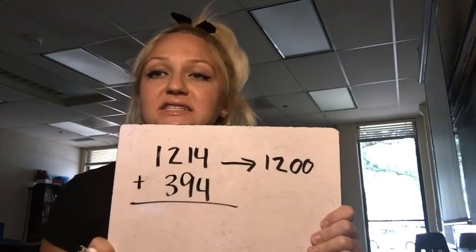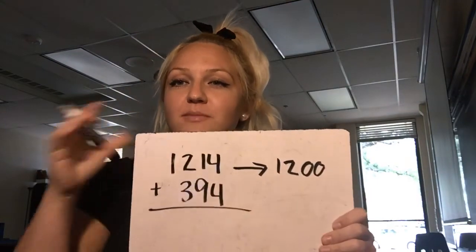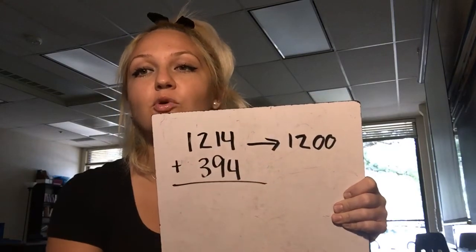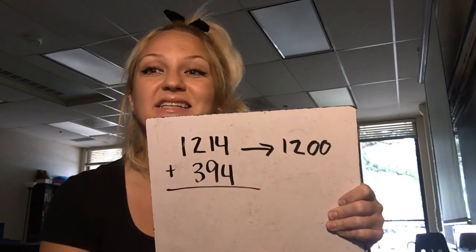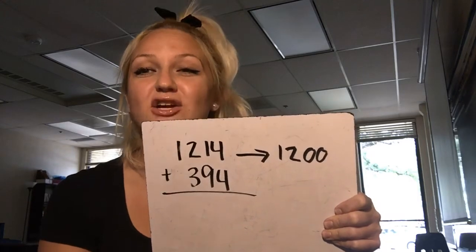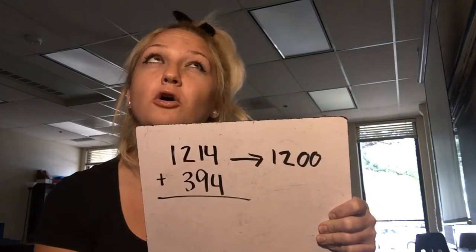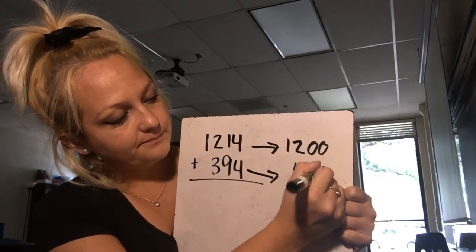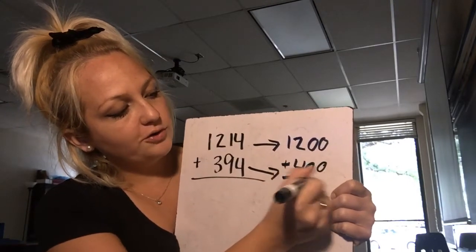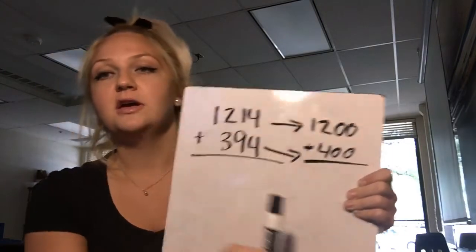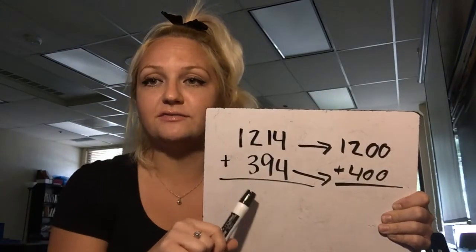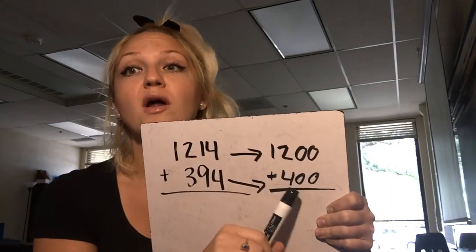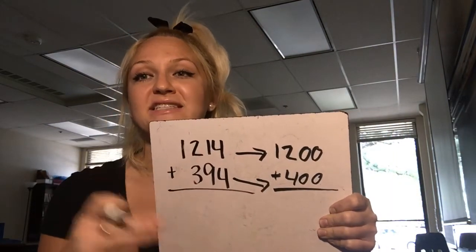Now we've had some practice with rounding, so this should be kind of a review skill for you. The next number is 394. It's not exact, but I want to make this easier. So 394 is almost 400 — I'm going to go ahead and make that 400. So if I want the total, I'm going to put those two numbers together. It's probably fairly easy to solve, but if you're going to solve it in your head, you want to make it as easy as possible.